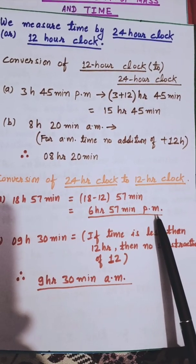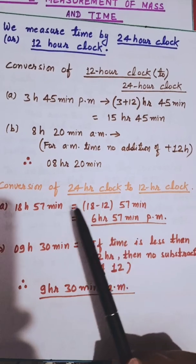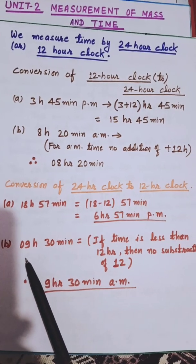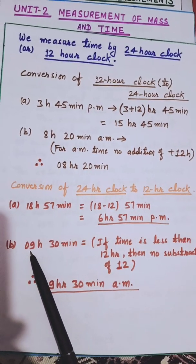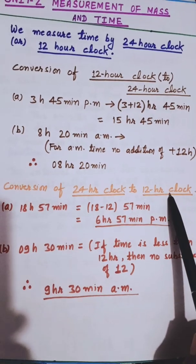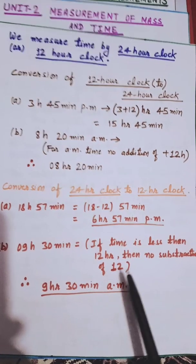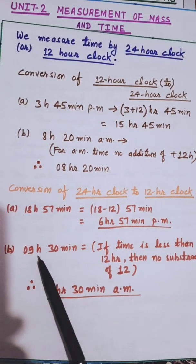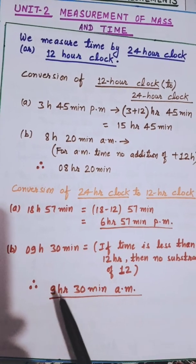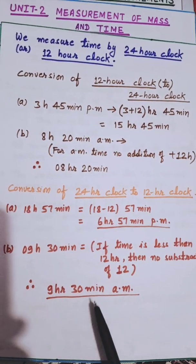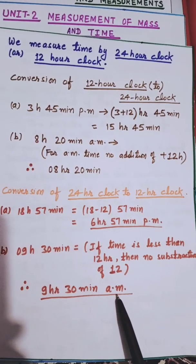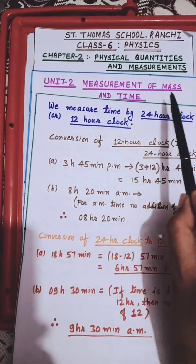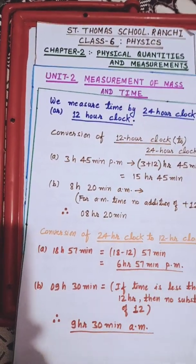Another example: 09 hours 30 minutes in 24-hour clock converted to 12-hour clock. Since the time is less than 12, we do not subtract any 12; we simply write 9 hours 30 minutes and mark it as a.m. This is all about the second unit — Measurement of Mass and Time. Thank you.